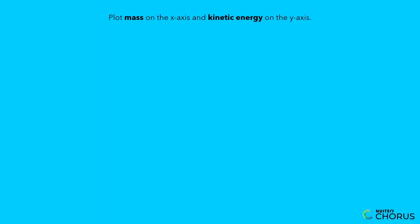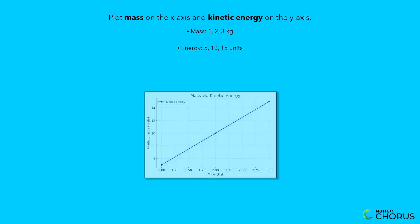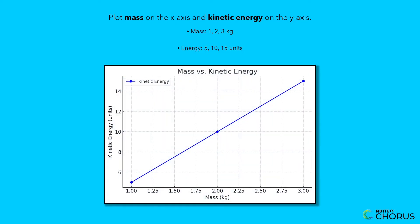Let's start simple. Plot mass on the x-axis and kinetic energy on the y-axis. Mass: 1, 2, 3 kilograms. Energy: 5, 10, 15 units. Notice the straight line? This shows a linear trend. As mass doubles, so does kinetic energy.